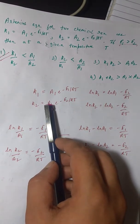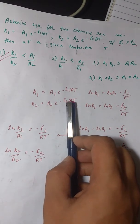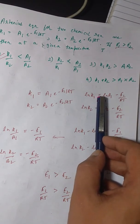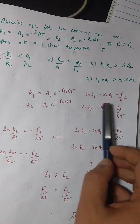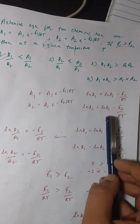Now what we do is we take natural log on both the sides. So ln k1 = ln A1 - E1/RT and similarly ln k2 = ln A2 - E2/RT.